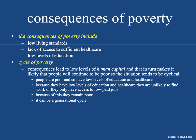The consequences of poverty include low living standards, lack of sufficient health care, and low levels of education. If you live in poverty, you're more likely to have lower living standards, less exposure to good health care, and lower educational attainment. This affects how productive you can be in society. There's something called the cycle of poverty, and the consequences of poverty lead to a low level of human capital — making you less versatile and with less mobility in your job, which in turn makes it likely that people will continue to be poor.